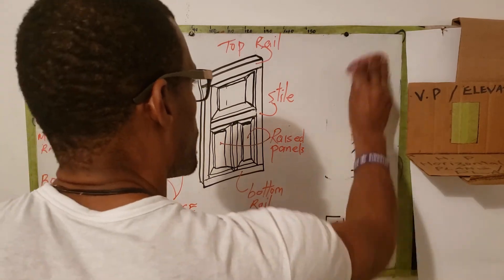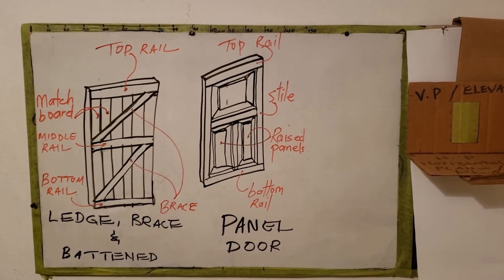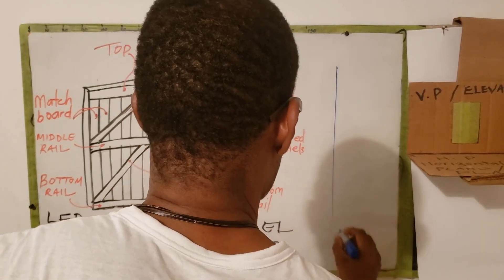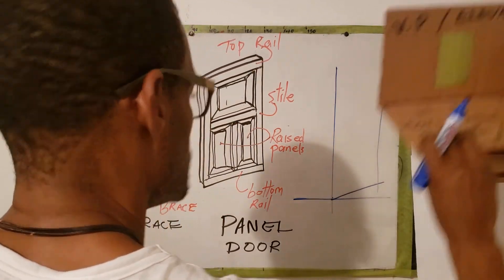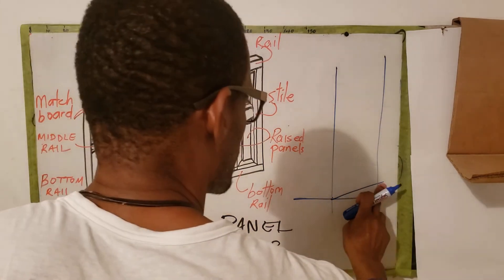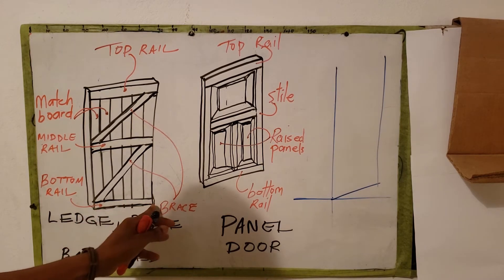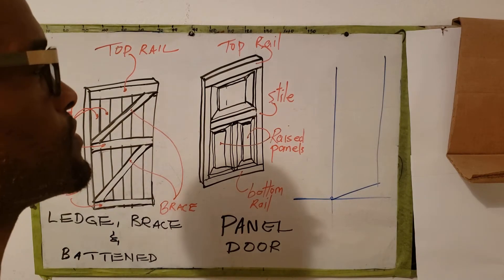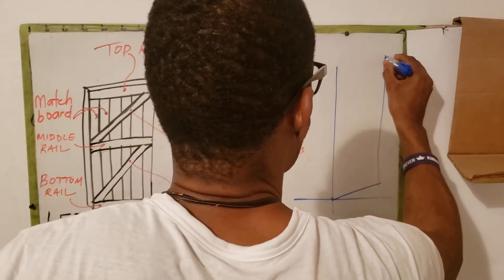Now let's go across to the drawing of the panel door. So my next step - in this case everybody is isometric - so I establish that and my 30 degree angle, then I establish my width. Now it's important to know that when you're doing a sketch, ratio and proportion is extremely important. So if the door is 900 millimeters wide and the height is 2100, it means therefore the height should be a little over three times the width.